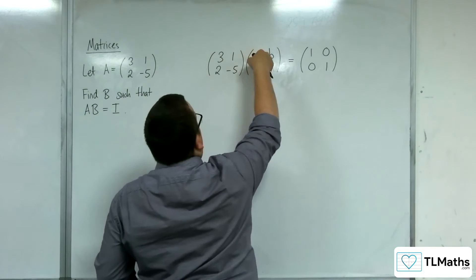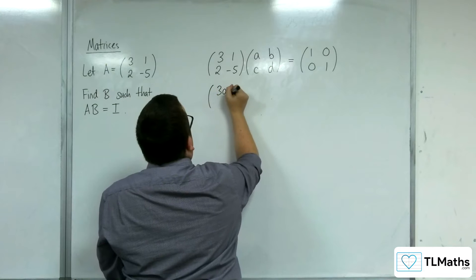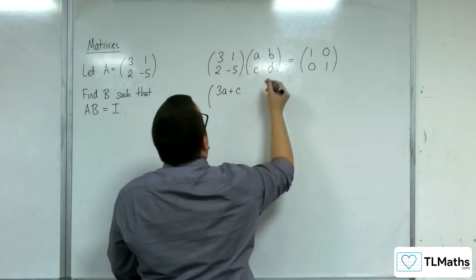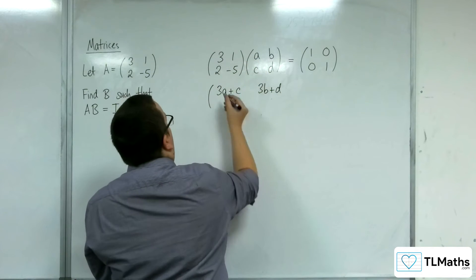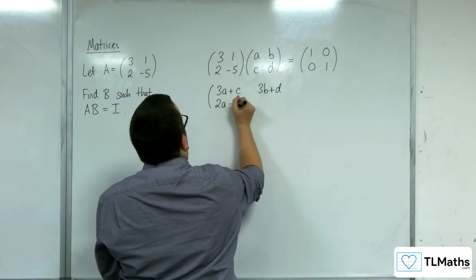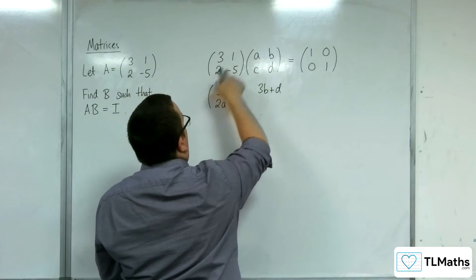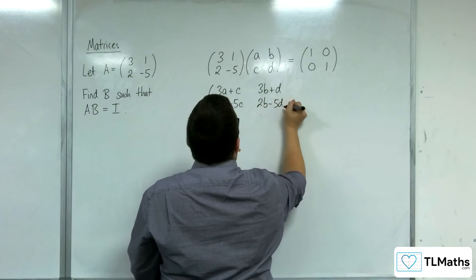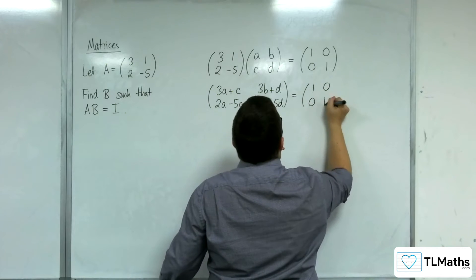So if we do 3, 1 times the A, C, we'll get 3A plus C. 3, 1 times the B, D, so 3B plus D. 2 minus 5 times the A, C, so 2A minus 5C. And then 2 minus 5 times the B, D, so 2B minus 5D. And that's going to be equal to this 1, 0, 0, 1.